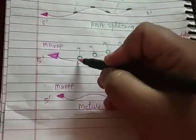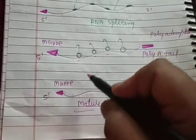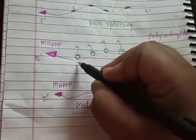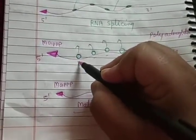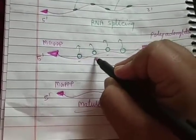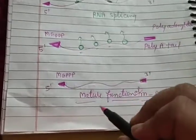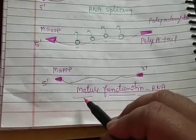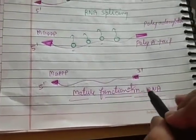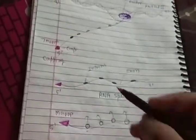After introns are removed, the gap is filled by RNA ligase enzymes. The remaining coding/functional genes join together, and a mature, functional mRNA is formed.